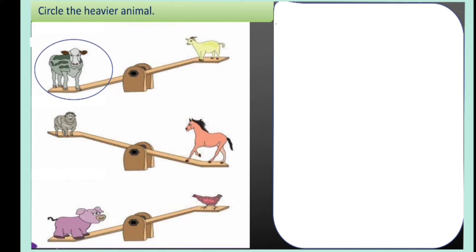The second one, we'll see the horse is down. The sheep is up. So we circle the horse. That shows the horse is heavier.